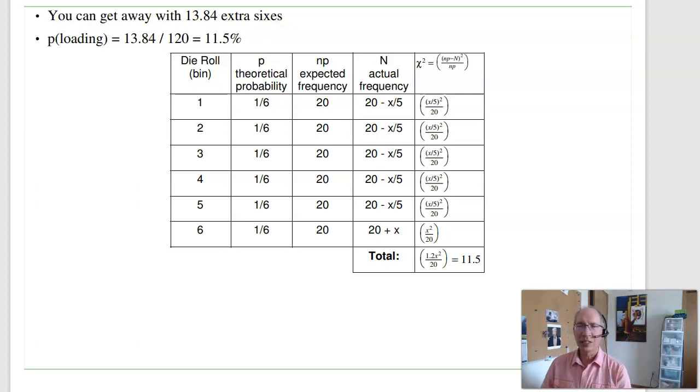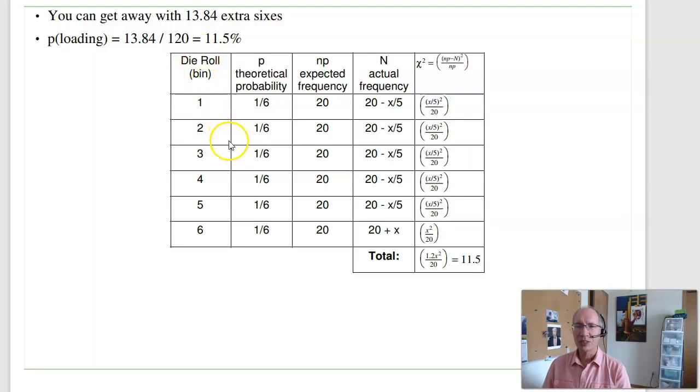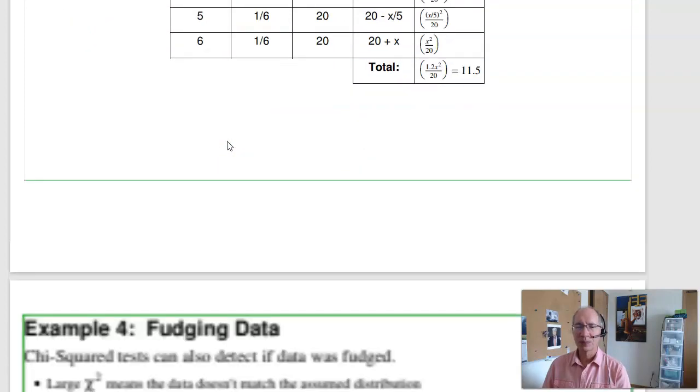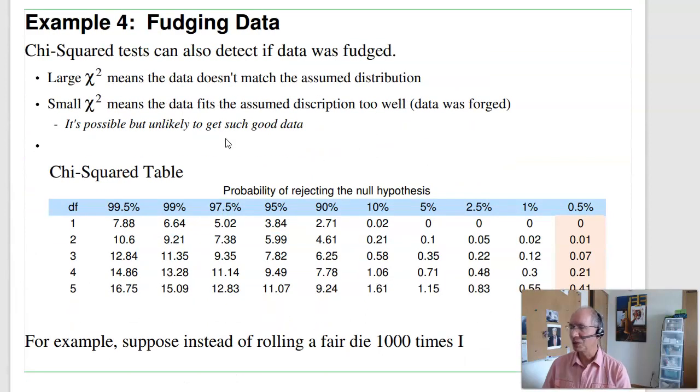That's one use of chi-squared test. I can see how blatantly I can cheat and get away with it. Or, if I'm worrying about German subs in World War II, how many times I can respond to a German message without the Germans realizing we cracked the code. So, now when you watch the imitation game, you can know what they're talking about.